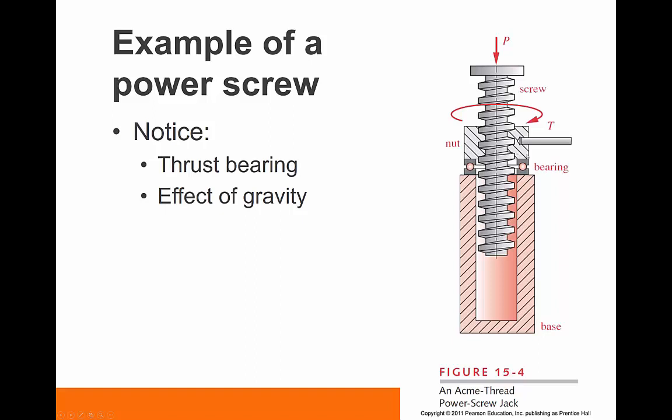Also notice that there's sliding happening in two different locations. One of the locations is actually in the threads. So there's sliding going on between the thread of the nut and the thread of the screw. The other place that there's friction happening is between the collar or the nut and the housing. And so in this particular case, a ball bearing, thrust bearing has been applied to this scenario to allow the nut to slide freely as it translates rotationally with the torque. We'll discuss the effect of the friction of the collar on the housing as well as the friction of the thread in the nut.